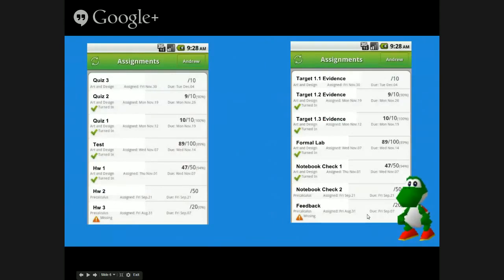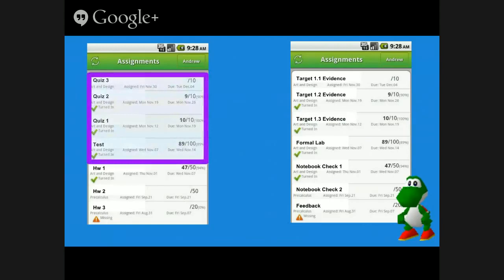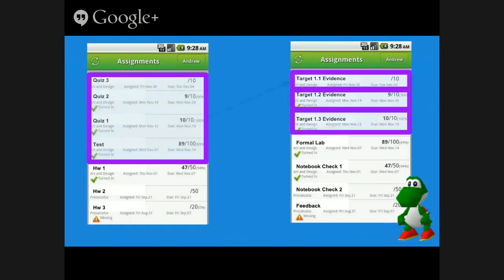On the left you see the old method, on the right the new method. I've taken tests and quiz scores and broken them apart, dividing them up into the target evidences they're trying to show. One test or quiz may have multiple targets, multiple evidences shown in them.